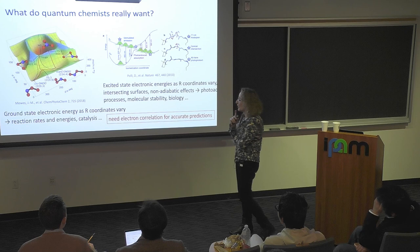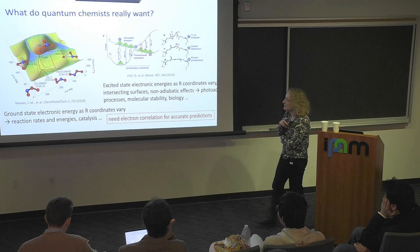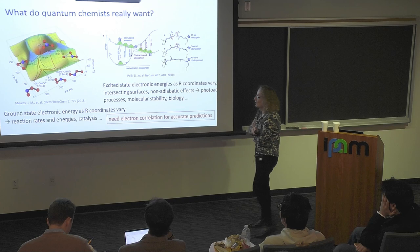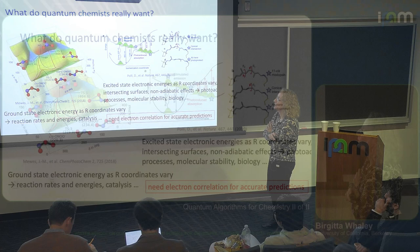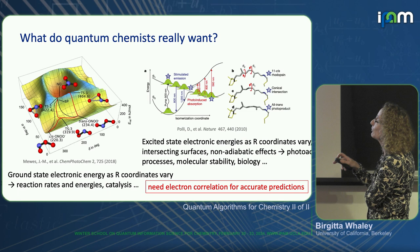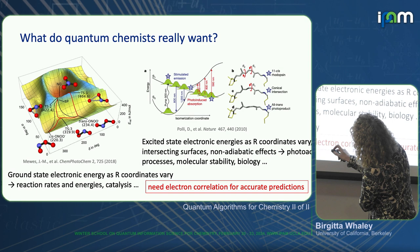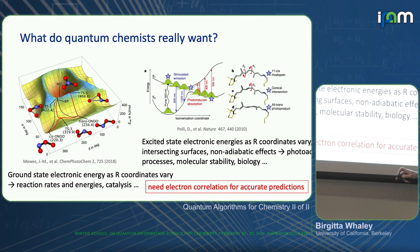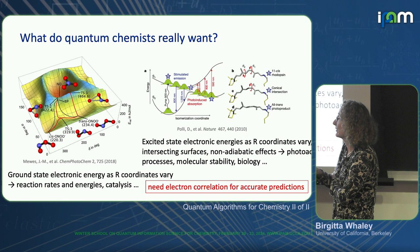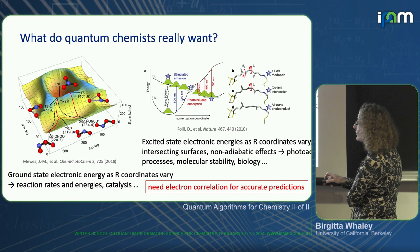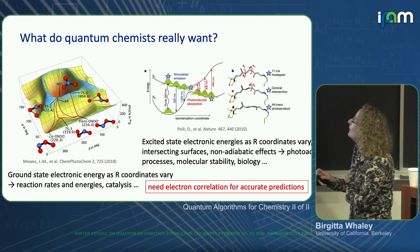A fundamental pillar of the field is to get ground state electronic energies as the nuclear coordinates vary. This gives information not just about stable molecules, but if you follow these ground states over barriers between different minima, you learn about transition states, reaction rates, and transition state energies — very valuable information for processes like catalysis.